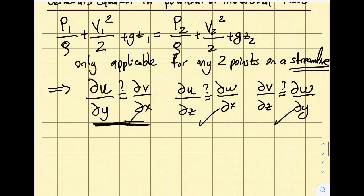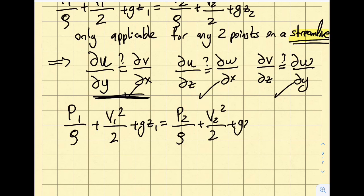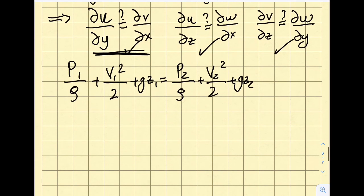Now if this is satisfied, I will relax the assumption that this needs to be on a streamline. What I'm going to say is P1 over rho plus V1 squared over 2 plus gz1 will be equal to the same equation. This is Bernoulli's equation.